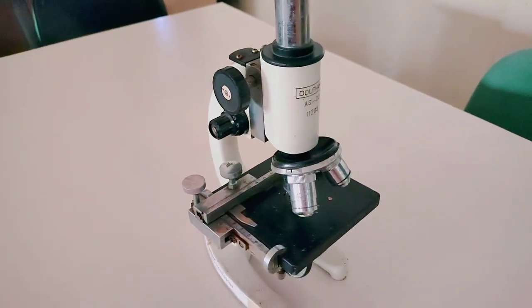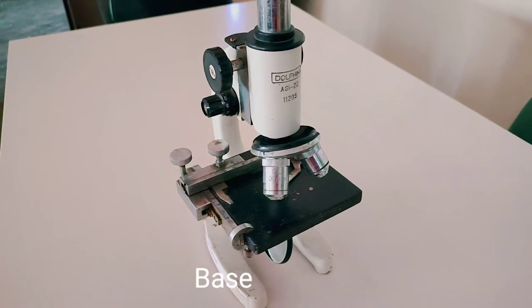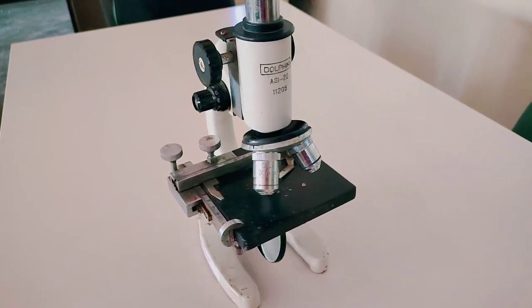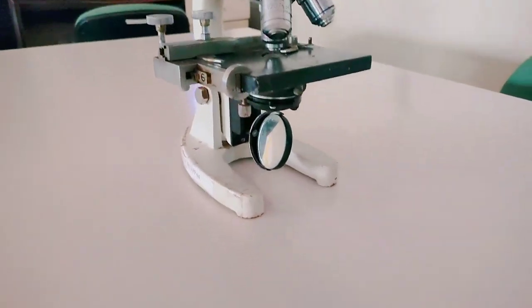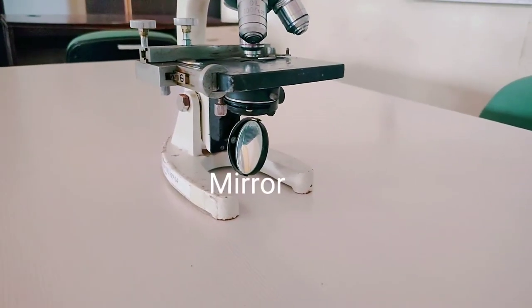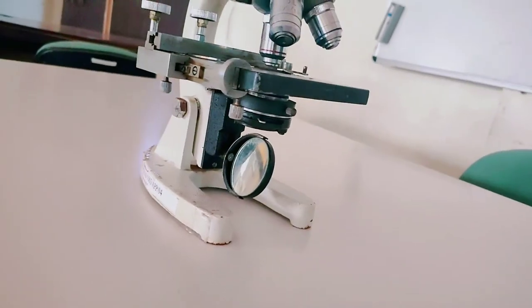Then at the bottom, this is called the base. After the base, the next part is the mirror. This one is the mirror, and above the mirror there is a condenser present.